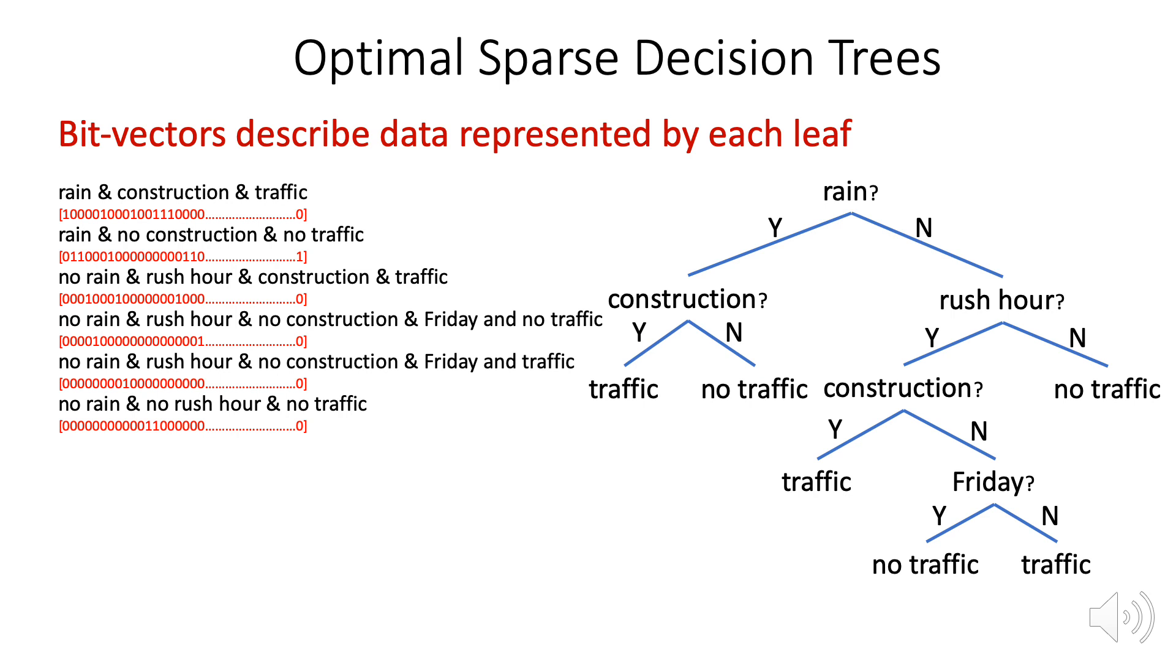Additionally, we store a bit vector, indicating which data points have features corresponding to the features described by the leaf. And this lets us use fast bit vector operations to compute bounds.